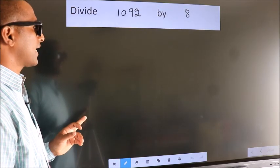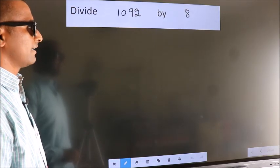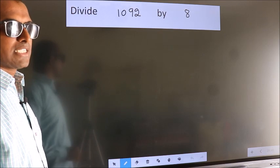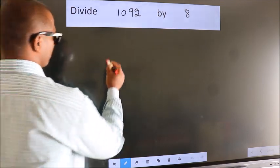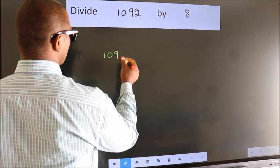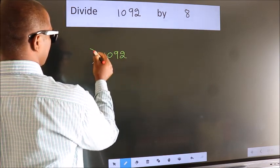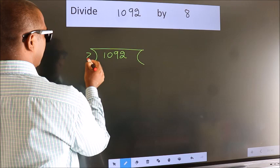Divide 1092 by 8. To do this division, we should frame it in this way. 1092 here, 8 here.